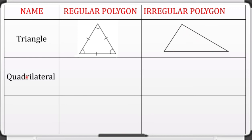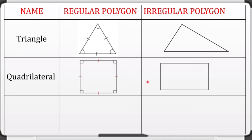What about a regular quadrilateral? This is a square. A square has equal angles of 90 degrees — all four angles are 90 degrees — and the four sides are also equal, making this a regular polygon. For an irregular polygon, this rectangle has angles of 90 degrees but the sides are not all equal, making it irregular.